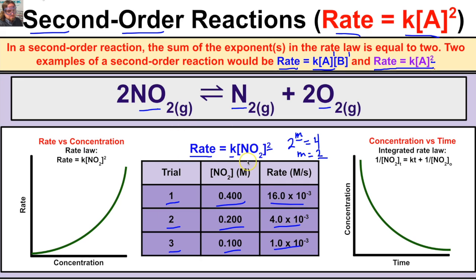If we graph the rate law for this second order reaction, we can see that increasing the concentration of NO2 a little bit increases the rate a little bit. But as we increase the concentration more and more, it has a greater and greater effect on the rate. If we double the concentration, the rate goes from 4.0×10⁻³ to 16.0×10⁻³ — that's exponential growth. The rate speeds up more and more every time we double the concentration.